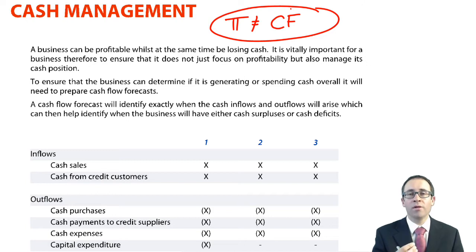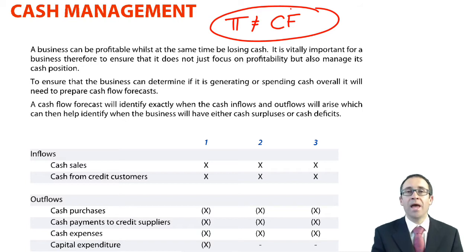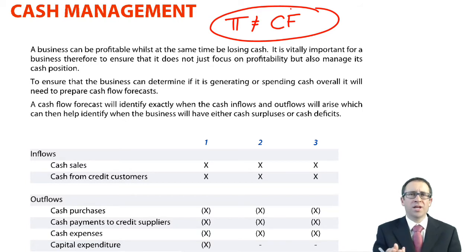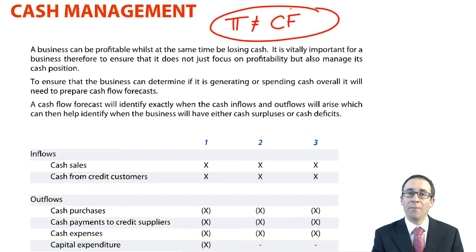It's going to be really important to know whether there are any particular months of the year whereby we have a shortfall in cash. Because if we have a shortfall in cash, we may have to borrow short term to fund the business for the next few months. But if we have an excess of cash for a few months, maybe we can invest that cash and generate more of a return. It's so fundamentally important that we know when we have cash and when we don't.